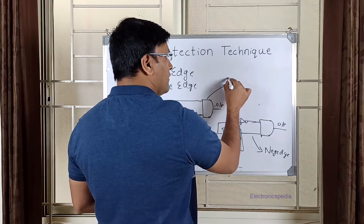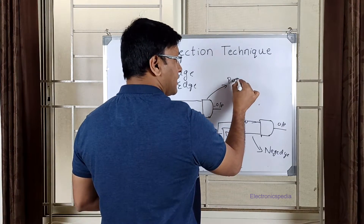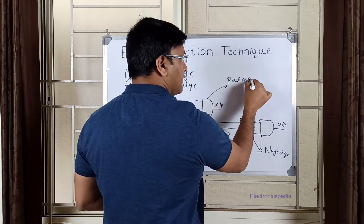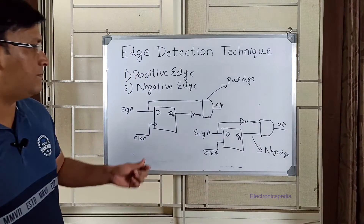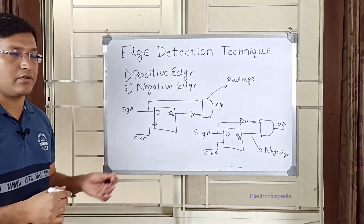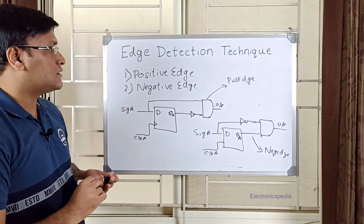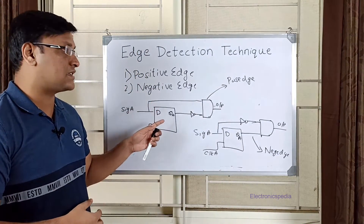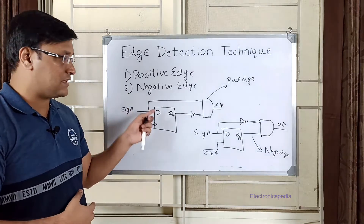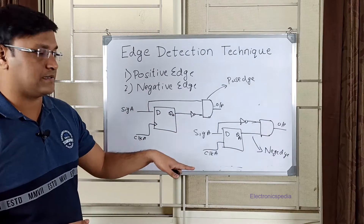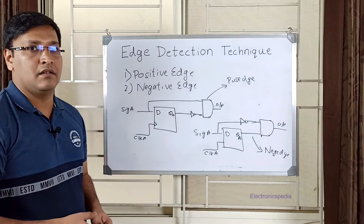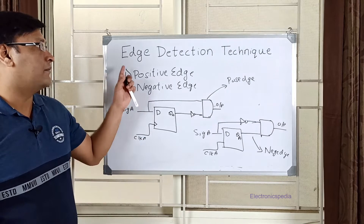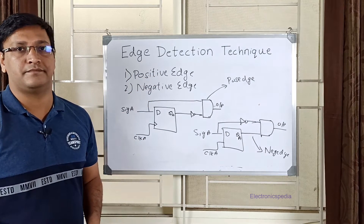That covers the edge detection technique. Basically, we use this technique to convert a level signal into a pulse signal. That's all about edge detection techniques — thank you.